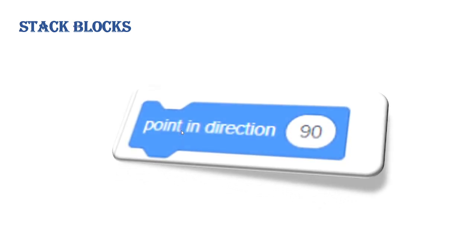Point in Direction is used to rotate the sprite in a specified direction. The direction is specified by the programmer. By default the value is 90 degrees, as you can see, but it is changeable. You can change the degree value as per your requirement, and you can rotate the sprite in 360 degrees in a circle.